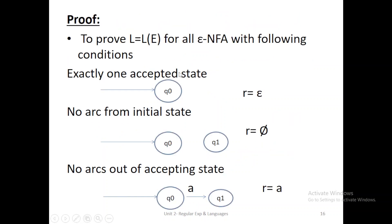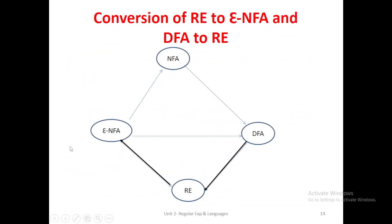If an NFA contains the epsilon symbol in it, that NFA is called an epsilon-NFA. We already know the conversion of NFA to DFA, and epsilon-NFA to NFA, and epsilon-NFA to DFA. In the second unit portion, if they give the regular expression, we can convert it to an epsilon-NFA. The second problem: if they give the DFA, we can convert it to a regular expression directly.